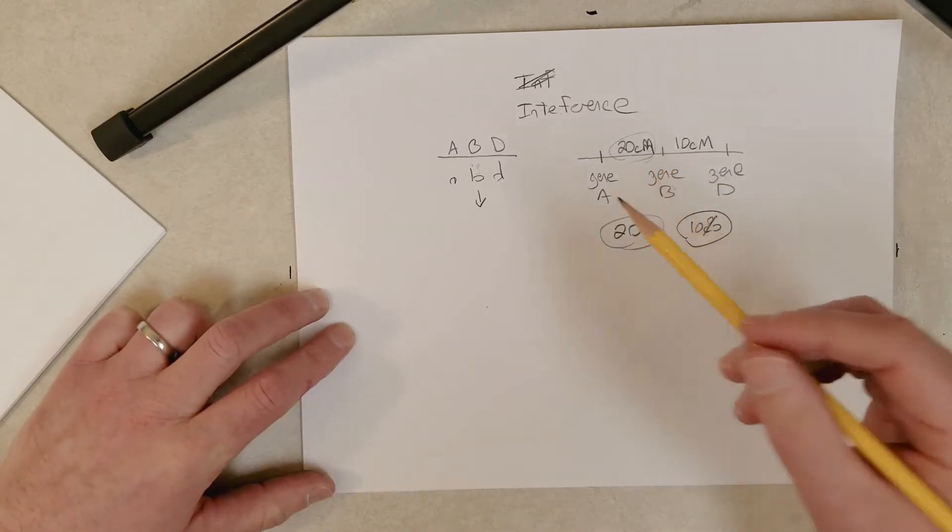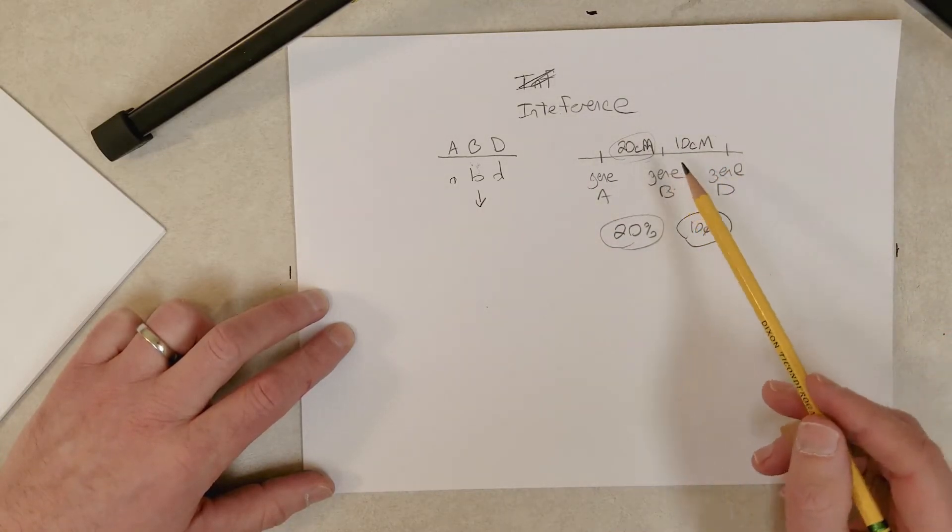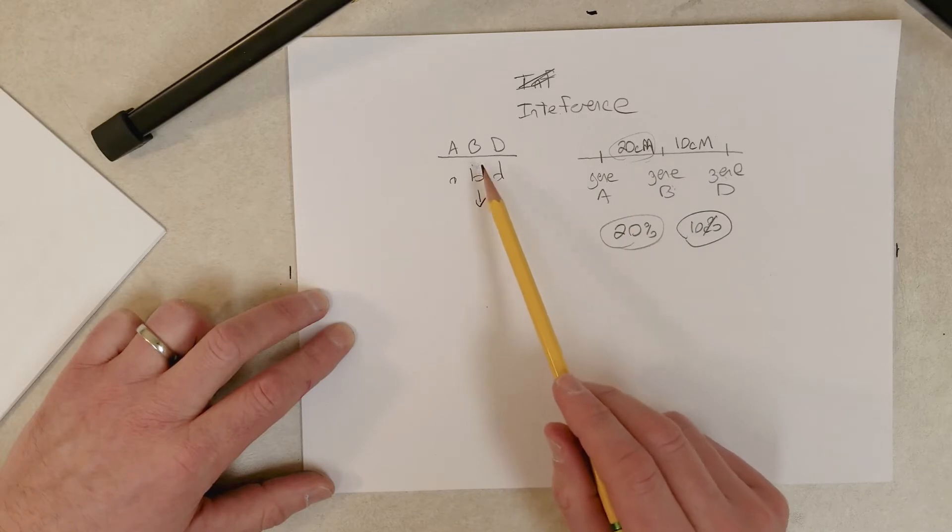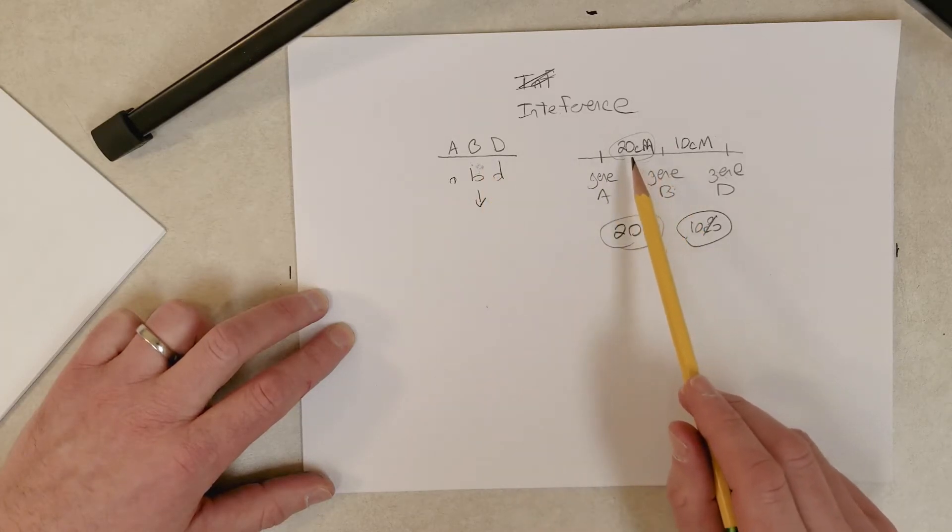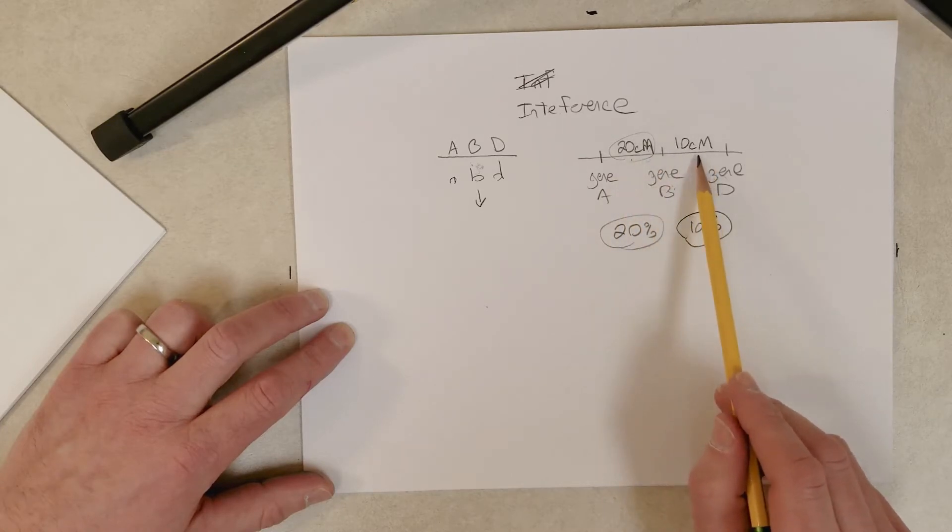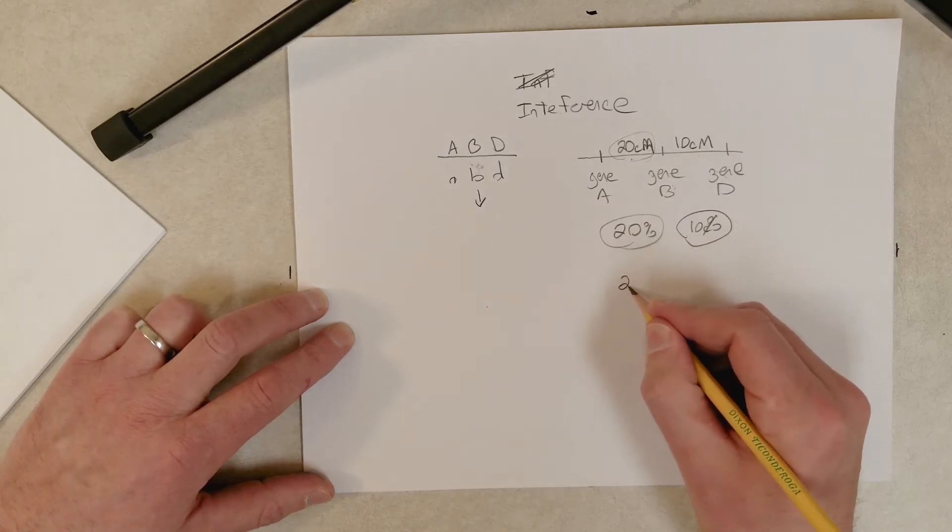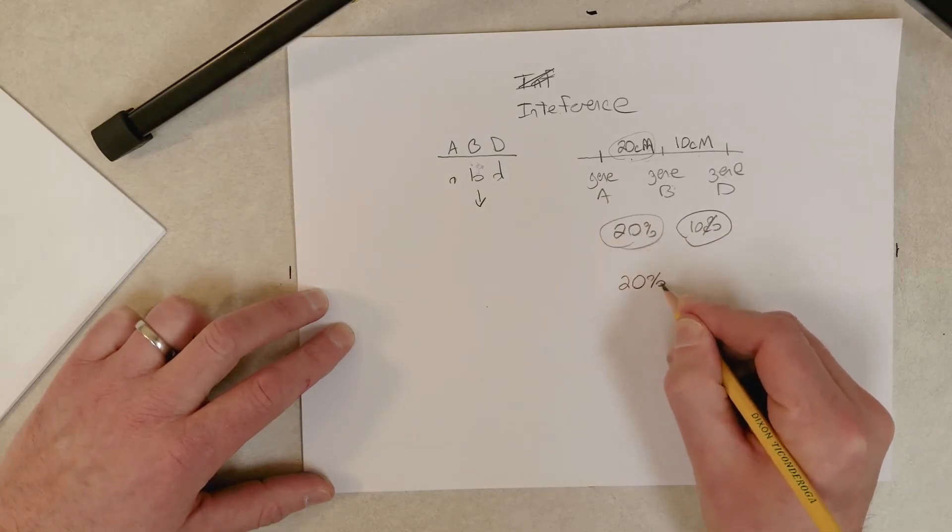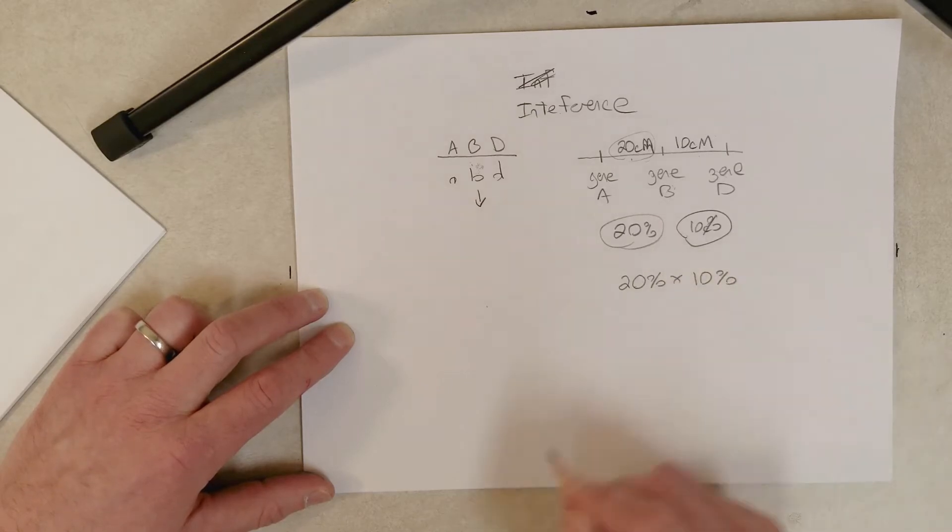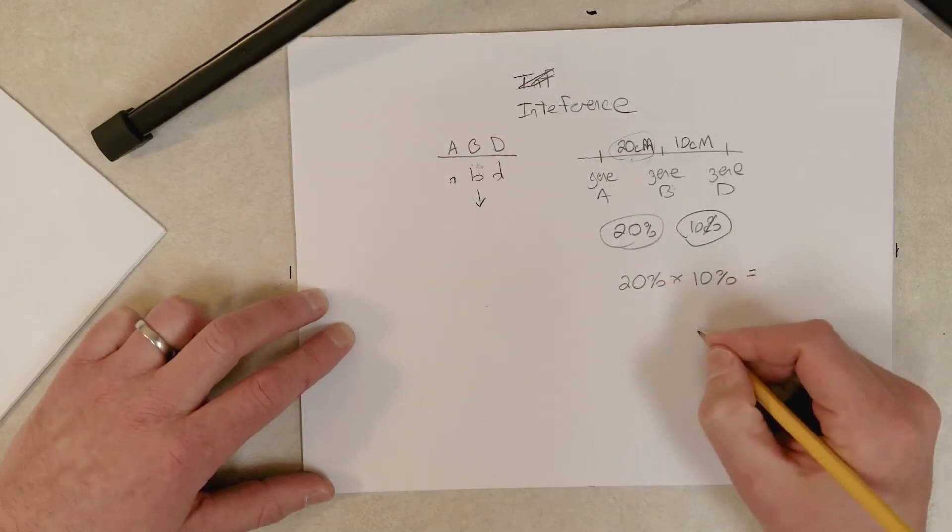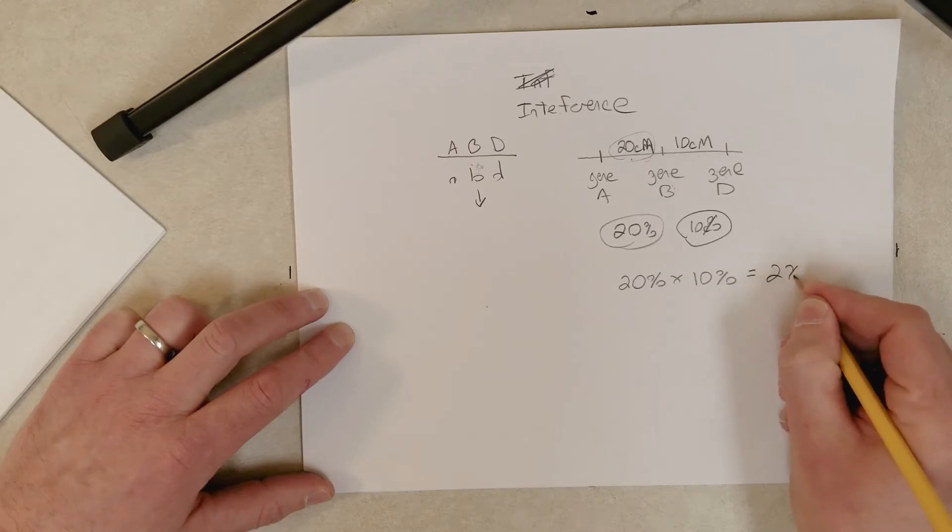So continuing on, what percentage of gametes formed by this individual would result from a crossover between gene A and gene B and a crossover between gene B and D? A double crossover involving these three genes. So to get that, we would simply multiply 20 percent times 10 percent, and that would give us 2 percent.